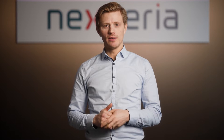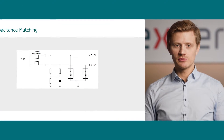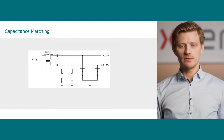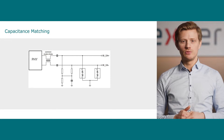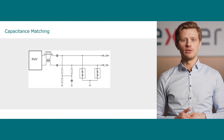What is capacitance matching and why is it important? In most mobile and automotive interfaces, a differential transmission with two signal lines is used. To protect both lines, we need to place two ESD protection devices on each of the lines.